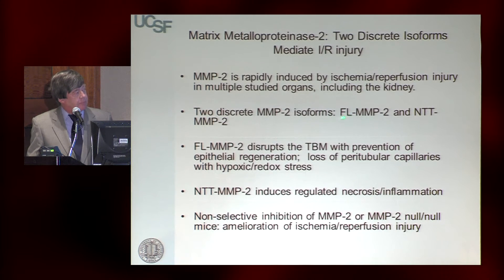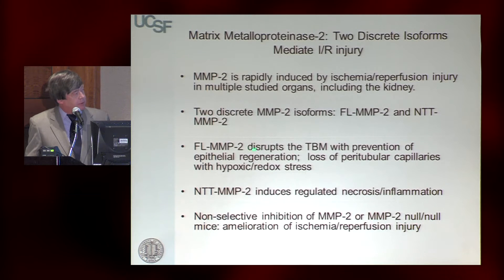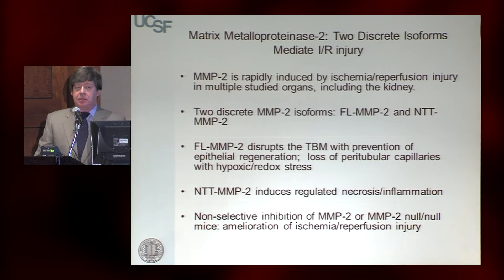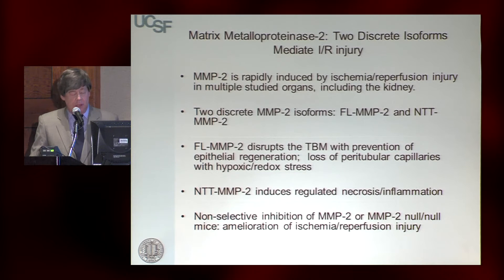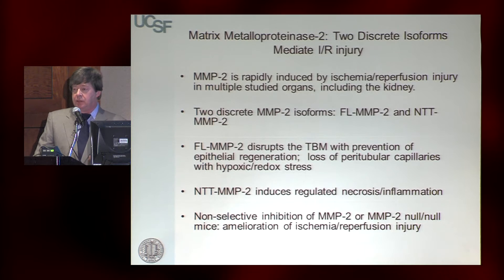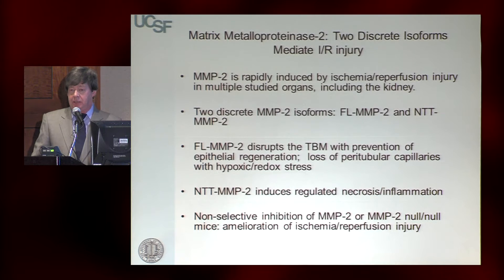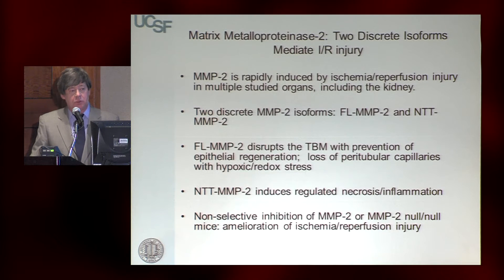There are two discrete isoforms of MMP2. One is the original secreted form, and there is an intracellular isoform we found four or five years ago. The full-length MMP2 disrupts the basement membrane; if you disrupt the basement membrane in AKI, the tubular epithelial cells can't regenerate, and the kidney cannot repair itself. There is also a loss of peritubular capillaries. We now know that AKI predicts progression to CKD, and the most likely mechanism is peritubular ischemia from loss of these capillaries, triggering an irreversible pro-inflammatory response.